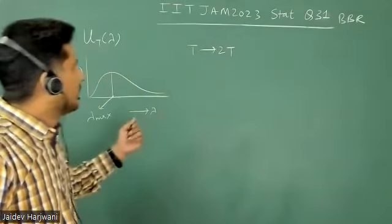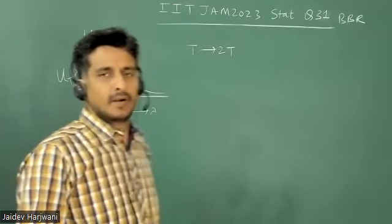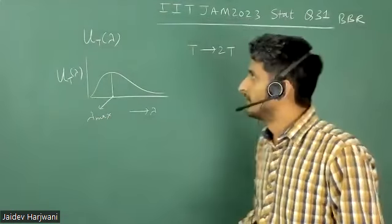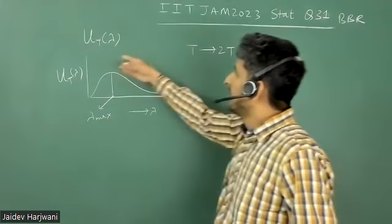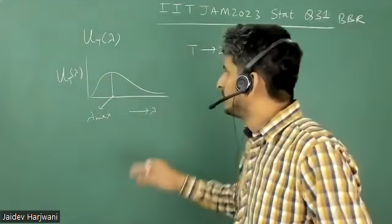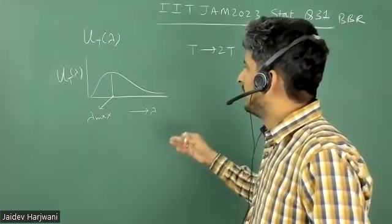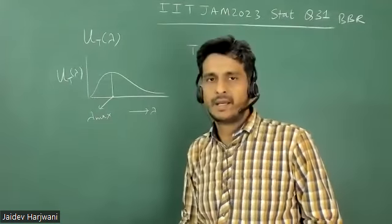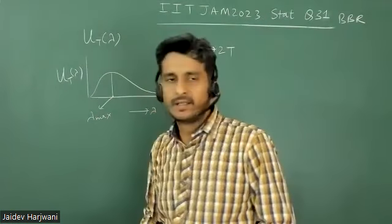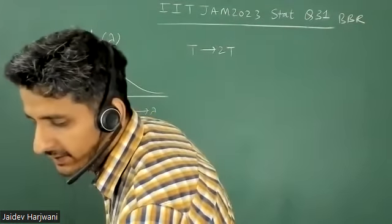So, this is a question from black body radiation, which is actually a very important topic. Many times we have seen questions from this. UT is the spectral energy density, which you know, is calculated by actually integrating the energy density.